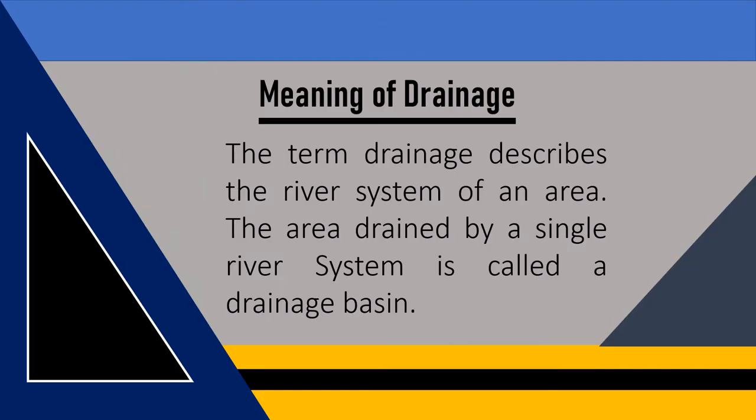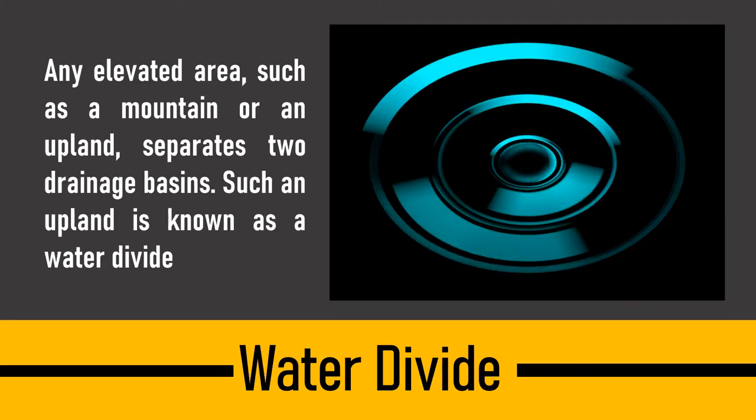We begin with the meaning of drainage. The term drainage describes the river system of an area. When a river originates and starts flowing from its origin till its destination, it covers a number of areas, and all those areas covered by the river constitute the drainage system, also known as the river system.